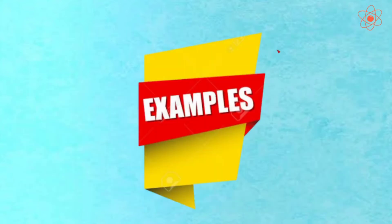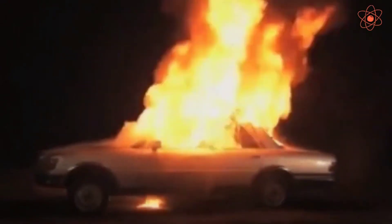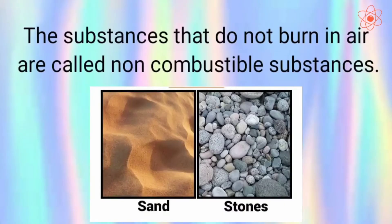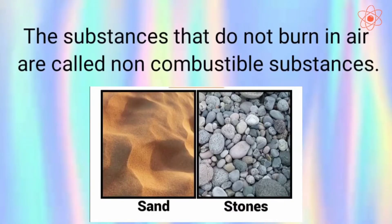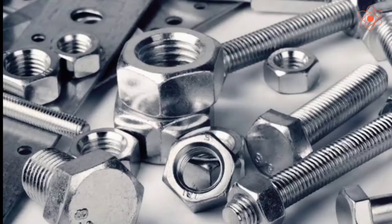Examples of combustible substances include diesel, petrol, LPG, etc. The substances that do not burn in air are called non-combustible substances. Examples include metals, glass, etc.